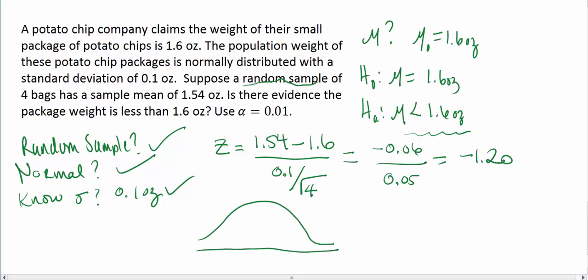It's going to be a lower one-sided. Because we're asking whether or not the mean is actually less than 1.6 ounces. So we are going to look for the area that falls below our test statistic from the standard normal distribution. We want to find the area that falls below negative 1.20.